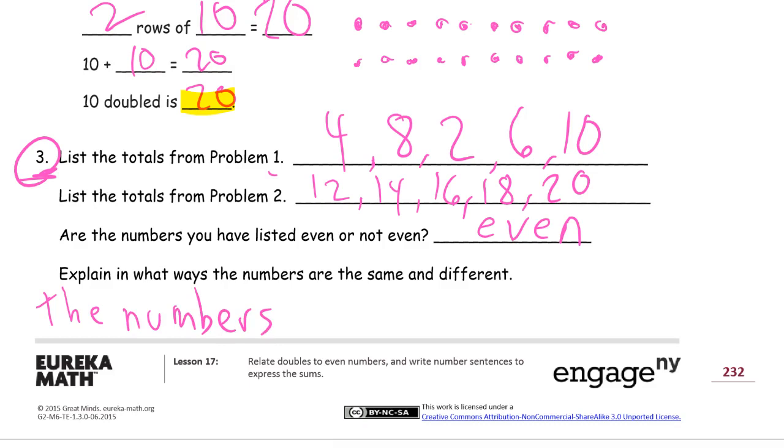Explain in what ways the numbers are the same and different. Well, the numbers are the same because they're all doubles, right? The numbers are all doubles. That's one way to put it. Or, they're all even. Either way. And, how are they different? They're just different numbers, aren't they? They're all doubles and different amounts or different numbers.